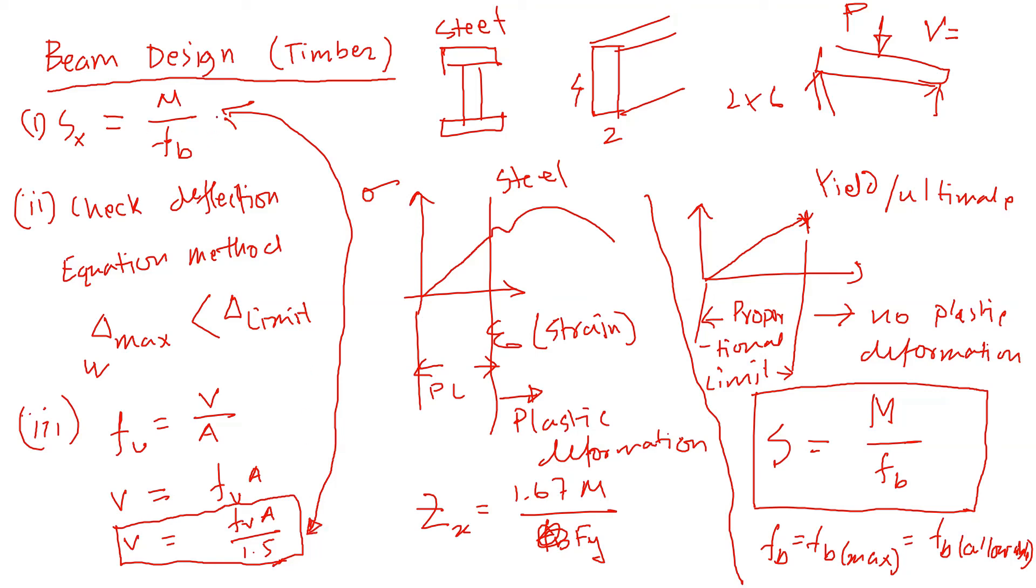Then we compare that—how much this beam can take. All the calculations are based on the initial choice that we made here. We calculate this Sx, the section modulus for the loading condition. We get that M, and the bending stress can be found in the appendix. Then we calculate the section modulus and choose a beam.